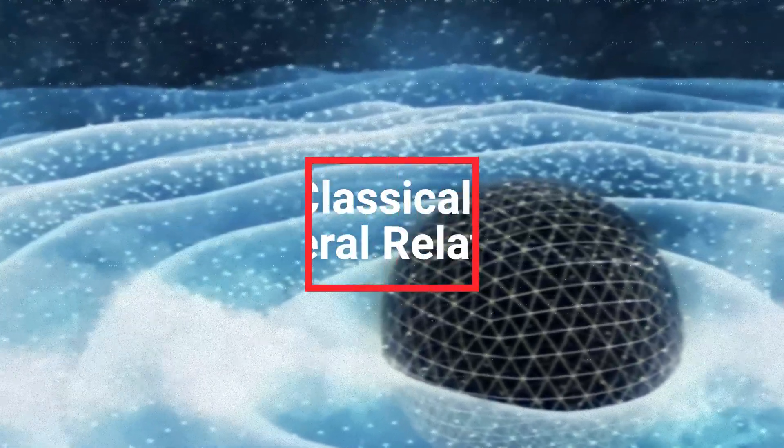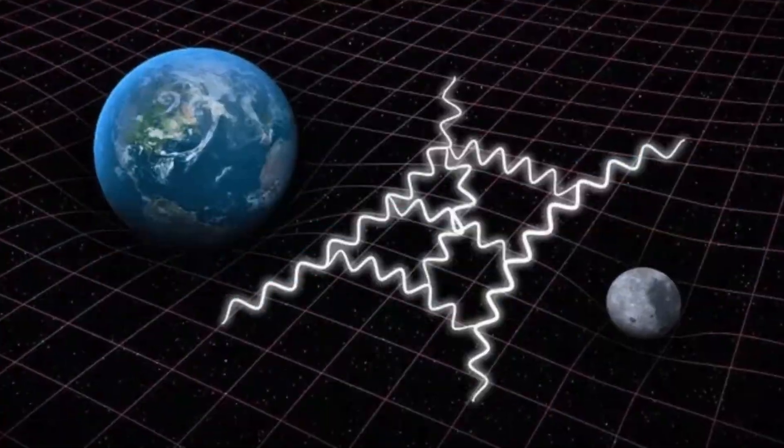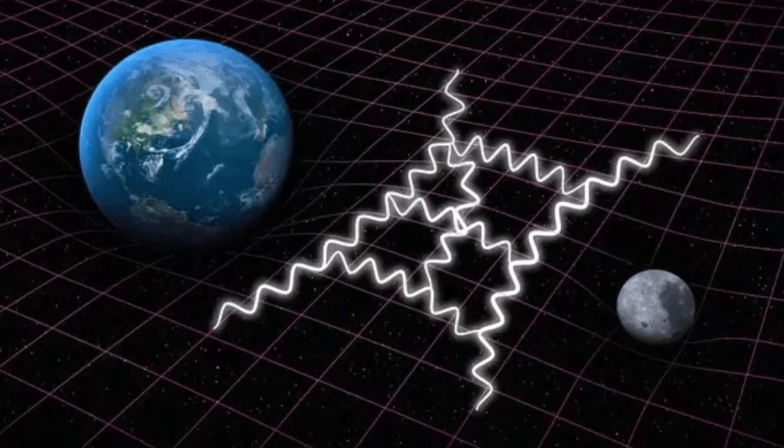The classical view, general relativity. In Einstein's theory of general relativity, gravity is not a force in the traditional sense, but rather the curvature of space-time caused by the presence of mass and energy.